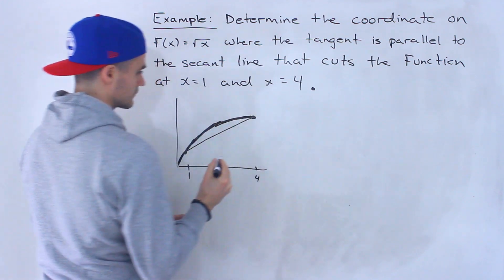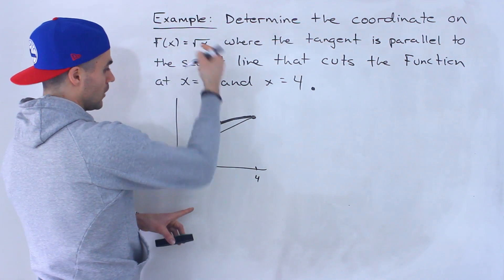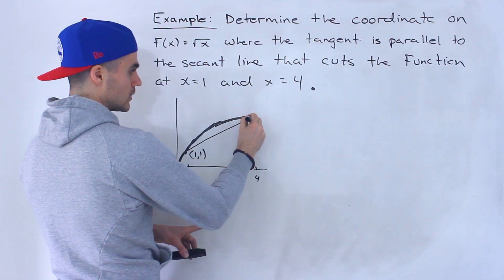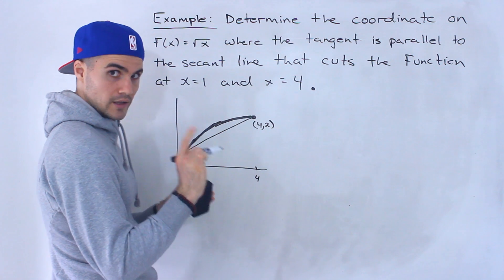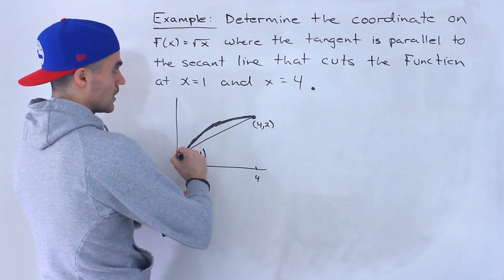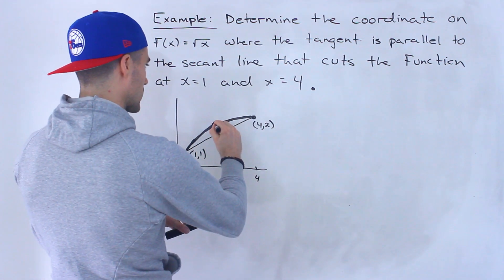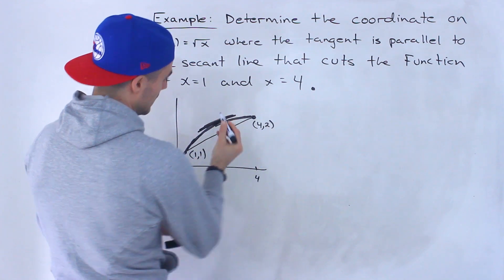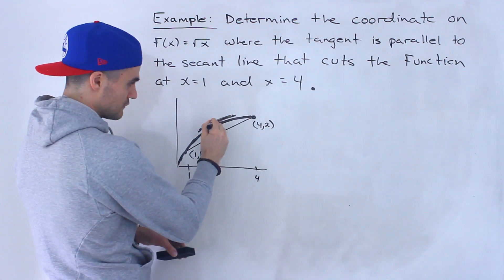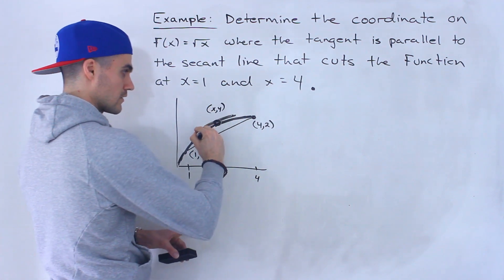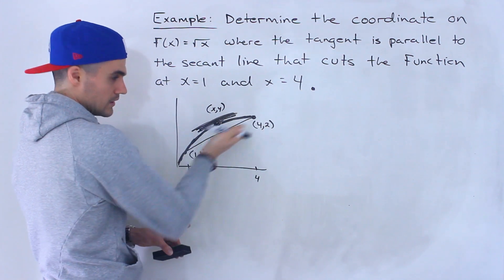So this is going to be the secant line. The full coordinates here are (1, 1) — if we plug 1 into x, √1 is just 1 — and the full coordinate of the other point is (4, 2), since √4 = 2. So we've got to find the coordinate on √x where the tangent is parallel to this secant. Notice from the diagram, the tangent is going to be somewhere in between, and at that point the tangent is parallel to the secant line.